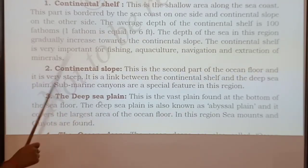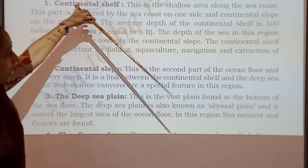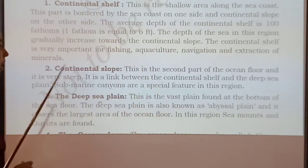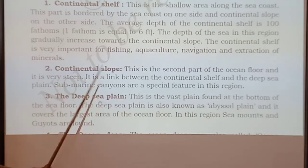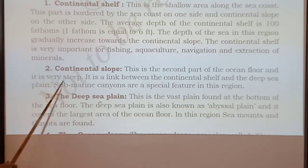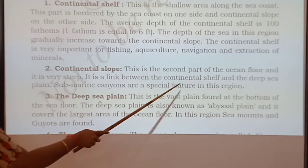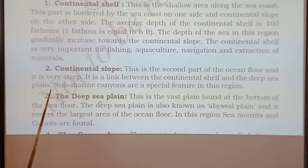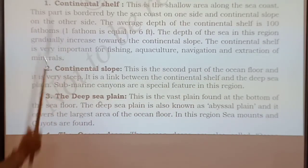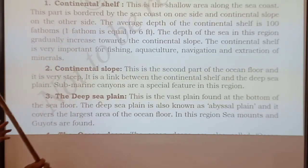What is the continental slope? The water stagnant on the shelf takes a flow and that flow becomes the continental slope. This is the second part of the ocean floor and it is very steep. It is the link between the continental shelf and the deep sea plain.